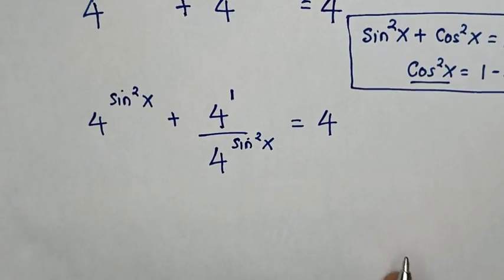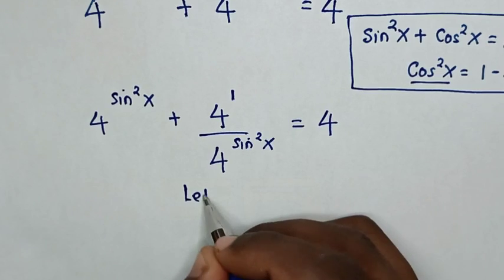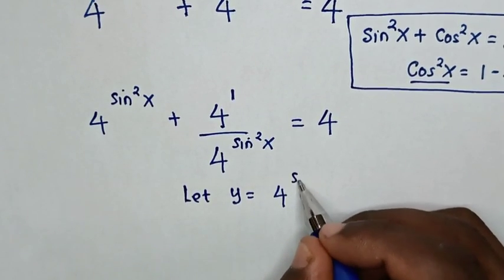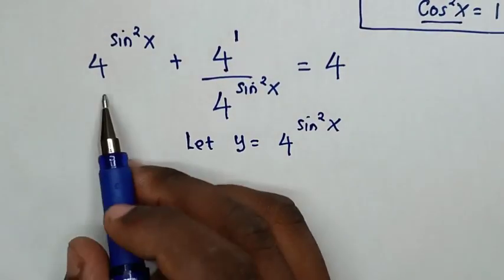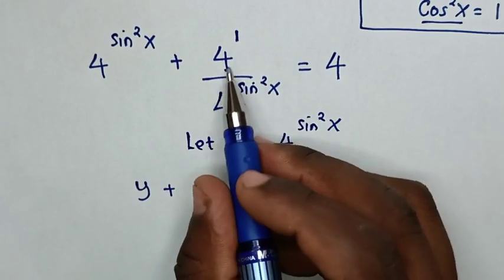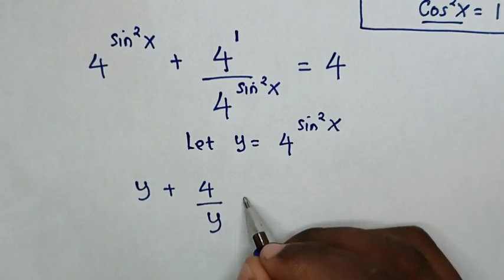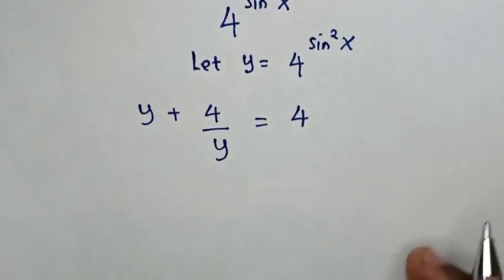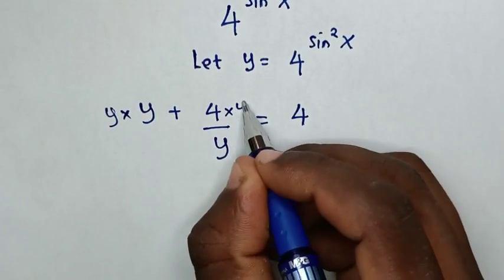In the next step, because 4 power of sine squared x is common, we let y equal to 4 power of sine squared x. Then our equation becomes y plus 4 power of 1, which is 4, over y is equal to 4. To remove this fraction, we multiply by y on both sides.